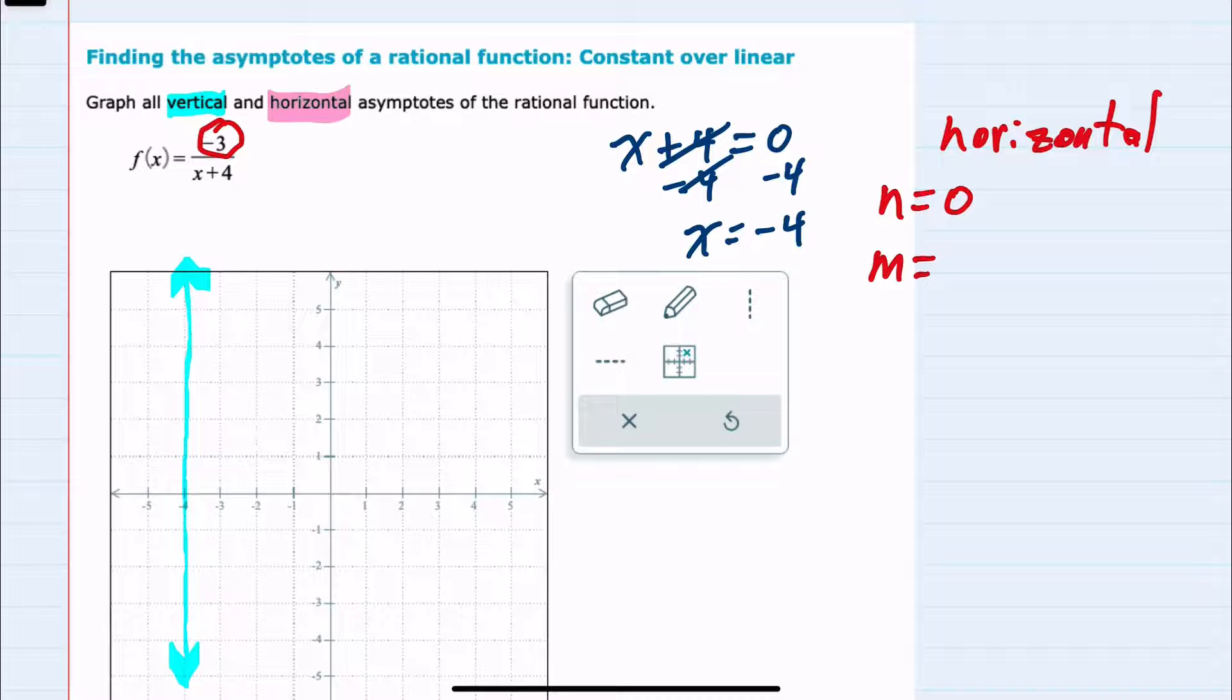And m, which is the degree of the denominator. I do have an x in the denominator, so it is degree 1. Then I look for the relationship between n and m.